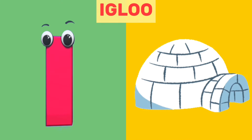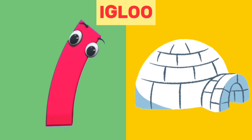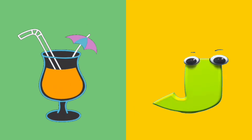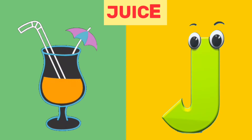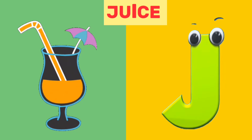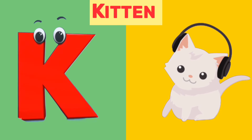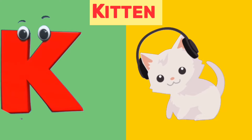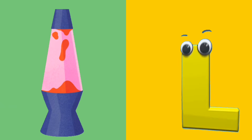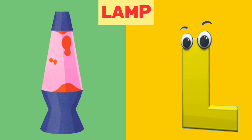I is for Igloo. I, I. Igloo. J is for Juice. J, J. Juice. K is for Kitten. K, K. Kitten. L is for Lamp. L, L. Lamp.